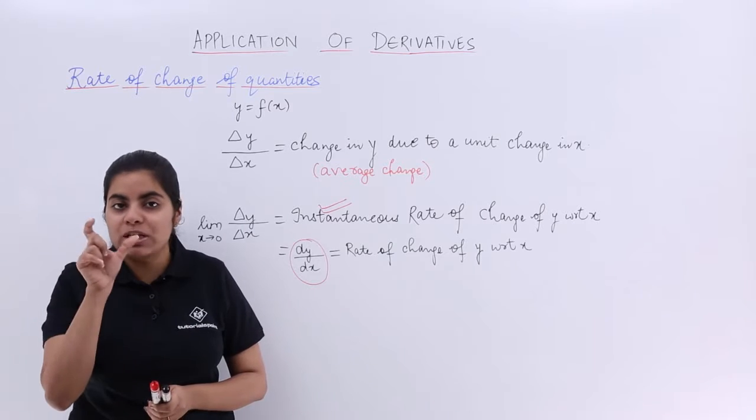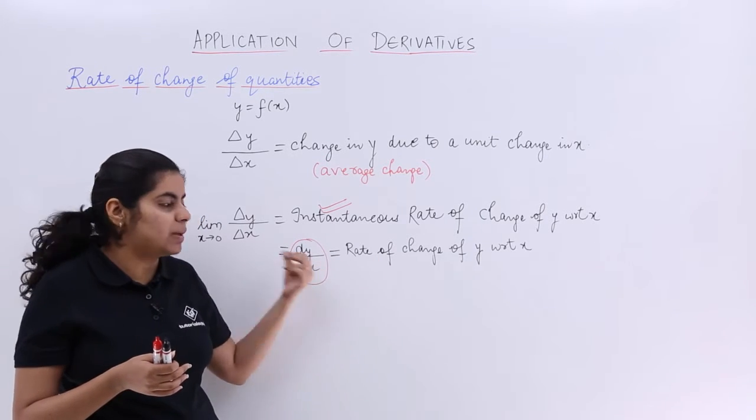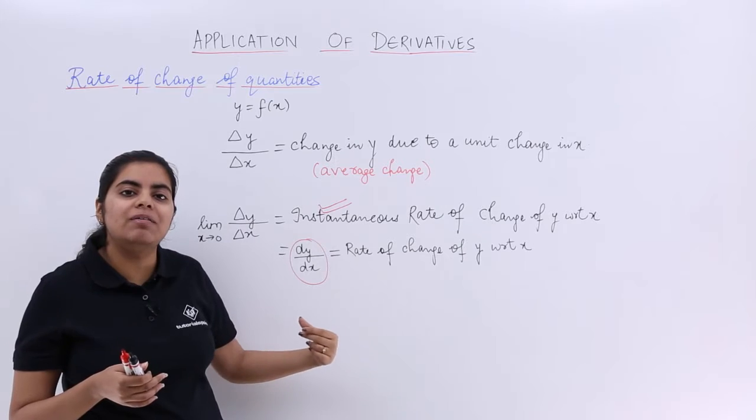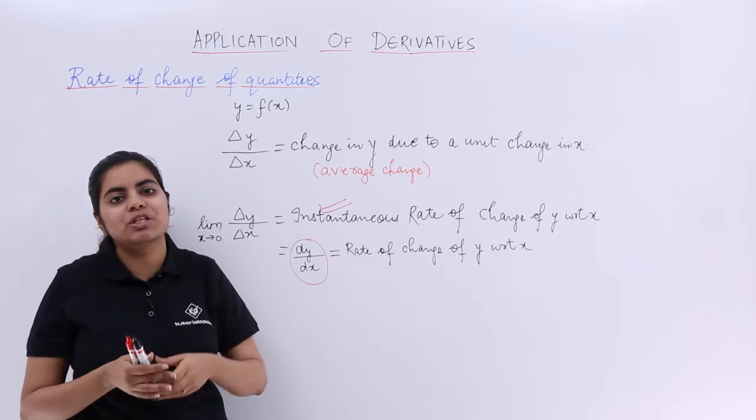So dy by dx means what? The rate of change of y with respect to x. If it is dx upon dy, the rate of change of x with respect to y.